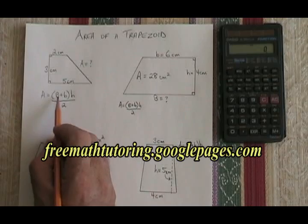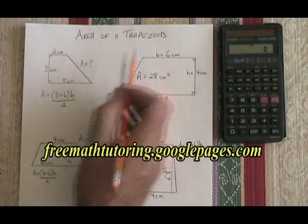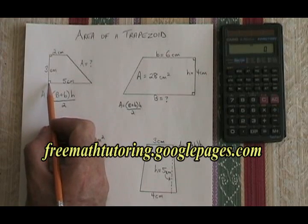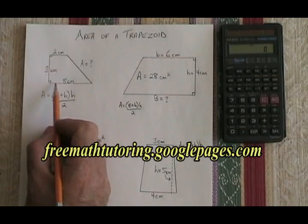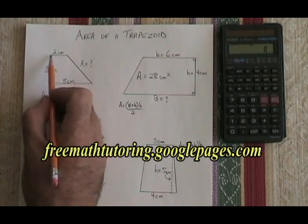The big B represents the longer of the two bases, because all trapezoids have two bases. In our right trapezoid, the big B, the longer base, is this longer one here, and it is parallel to the little b, the shorter base.